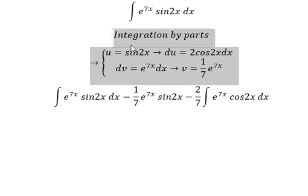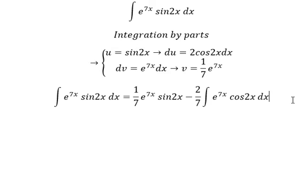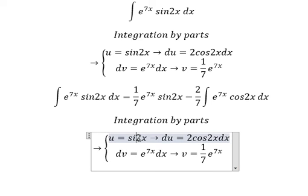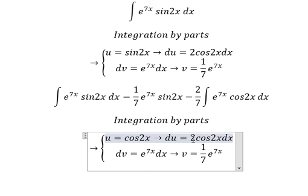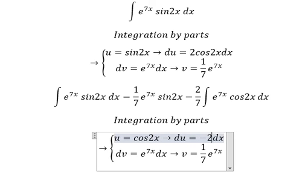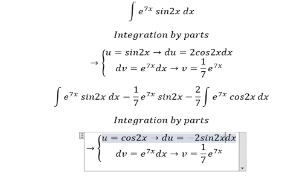Next we use integration by parts again. Now we change u to cos(2s), so du becomes negative 2·sin(2s)ds.